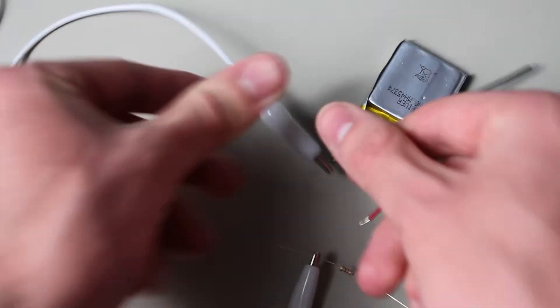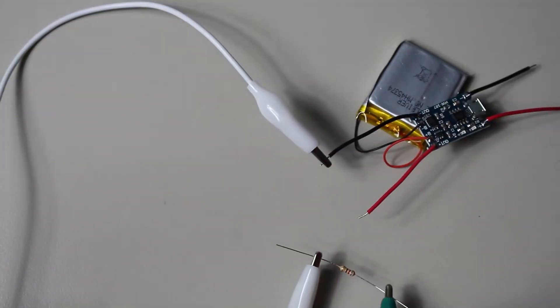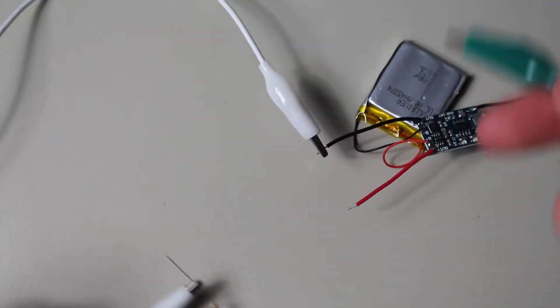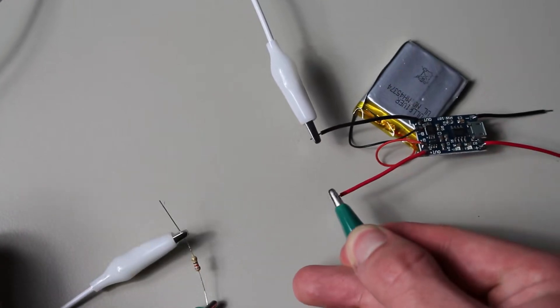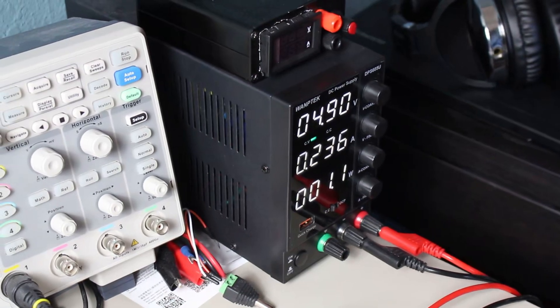Now we'll make sure that the discharge protection works properly. I attached the load and made sure that it turns off when the battery is empty. When the battery got down to about 3 volts, we can see that the output gets cut off.